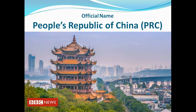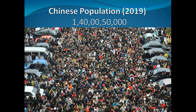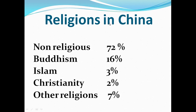Dear Students, China ka official name hai People's Republic of China, PRC yani Awami Jamhuriya Chin. Chin ka total area ham dekhen toh 9,596,961 square kilometer. Chin aabadi ke atibar se dunia ka sab se bada mulk hai. 2019 ki census ke according Chin ki population hai ek arab 40,50,000.